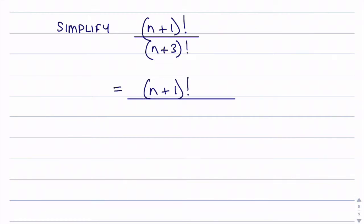I'll then take the denominator but I'll write it as n plus 3 multiplied by n plus 2 multiplied by n plus 1 factorial. Now you should notice I've got an n plus 1 factorial in the numerator and denominator.